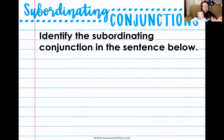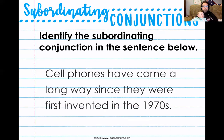So what we're going to do right now is try to identify the subordinating conjunction in the sentence, because this is going to lead you into your practice for this week. Here's a sentence: Cell phones have come a long way since they were first invented in the 1970s. Cell phones have come a long way — that works as an independent clause. Since they were first invented in the 1970s — I have a subject and a verb, but it's missing something.